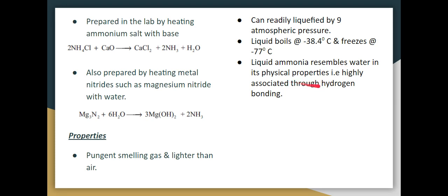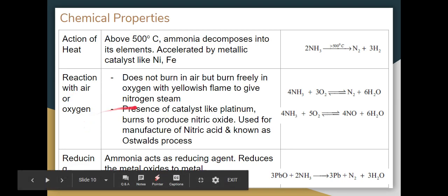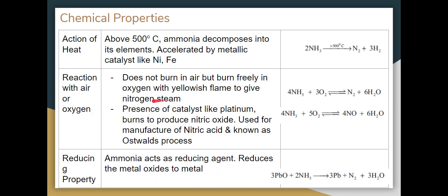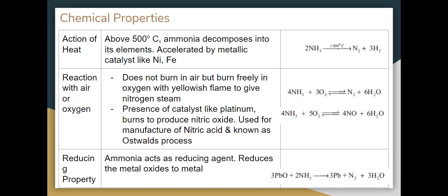Ammonia properties: it's a lighter, pungent smelling gas. It can be easily liquefied. Liquid ammonia boils at minus 38.4 degrees Celsius and freezes at minus 77.7 degrees Celsius. At higher degrees Celsius heat, it will decompose to give nitrogen and hydrogen. Reaction with air or oxygen: it will burn in air, but burns better in oxygen with a yellowish flame. Ammonia plus oxygen gives nitrogen plus 6H2O. With a catalyst like platinum, it will produce nitric oxide.